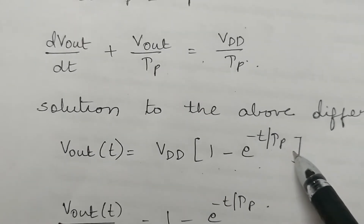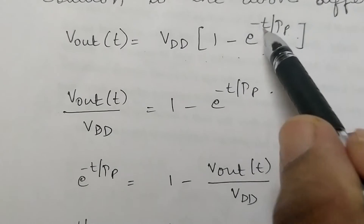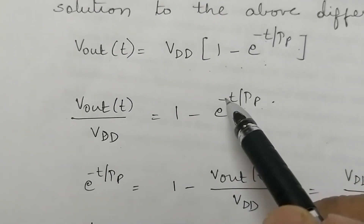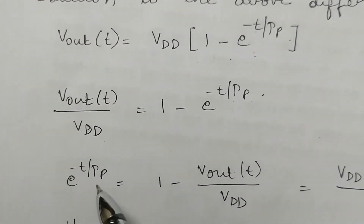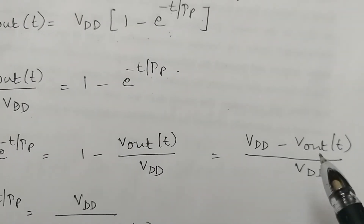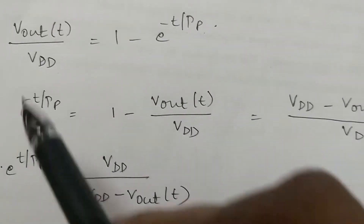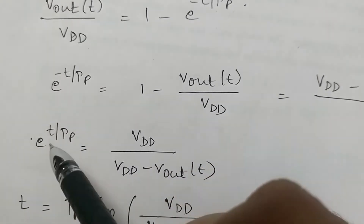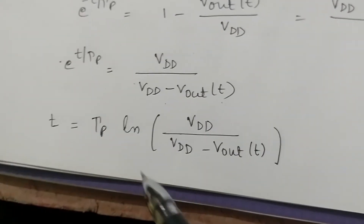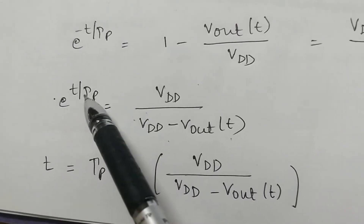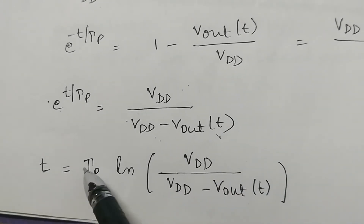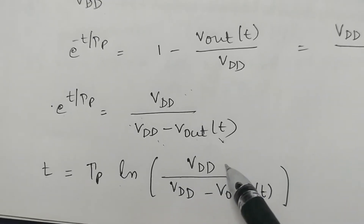To find T, we rearrange: Vout/VDD = 1 − e^(−t/τP), so e^(−t/τP) = 1 − Vout/VDD = (VDD − Vout)/VDD. Taking the reciprocal and then the natural logarithm: T/τP = ln(VDD / (VDD − Vout)), or T = τP · ln(VDD / (VDD − Vout)).